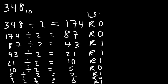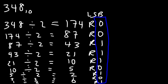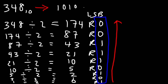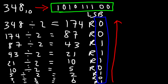What we have on top is the least significant bit, and the last result is the most significant bit. You can find your answer by reading all of the remainder values from bottom to top. So the binary number equivalent to 348 is 101011100. That's how we convert a decimal number into a binary number using successive division.